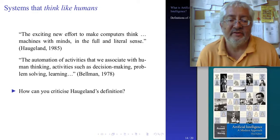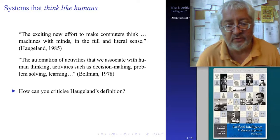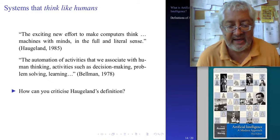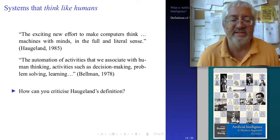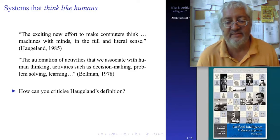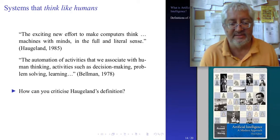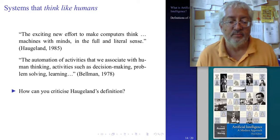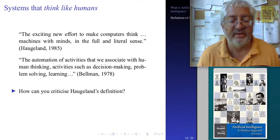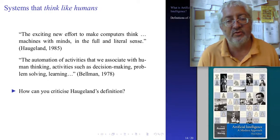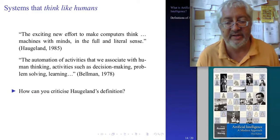Let's try another definition: systems that think like humans. We have two definitions here. The first says AI is 'the exciting new effort to make computers think — machines with minds in the full and literal sense' (Hoagland, 1985). The second is 'the automation of activities that we associate with human thinking, such as decision-making, problem-solving, and learning' (Bellman, 1978).